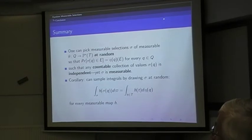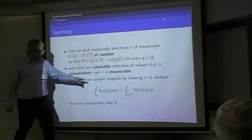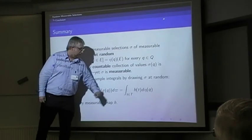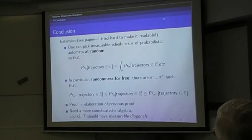The summary is you can actually pick measurable selections at random so that the obvious probabilities are satisfied. And more than that, essentially you can do so so that any countable sub-collection of values obtained at states is independent. But the whole collection can't be, because the whole collection has to be measurable, this enforces some dependence.